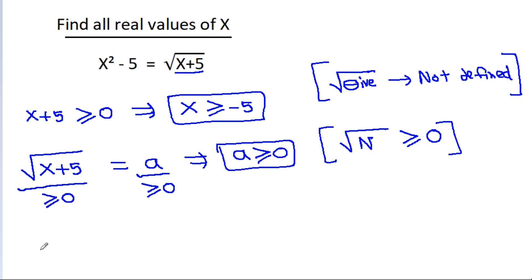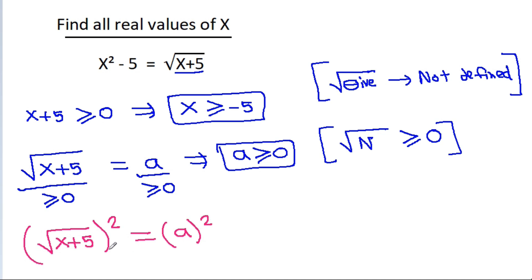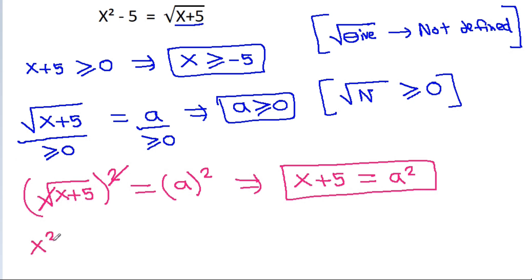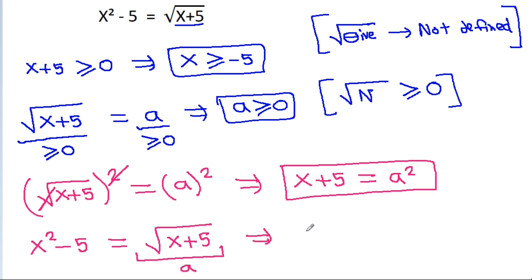We have the square root of x plus 5 is equal to a. If we square both sides, then a squared equals x plus 5. Also from the original equation, x squared minus 5 equals a, so x squared equals a plus 5.